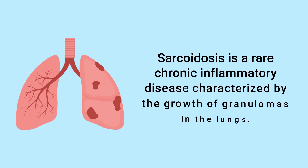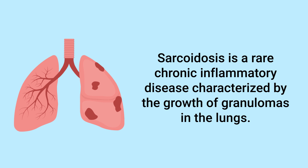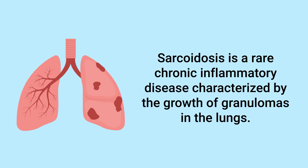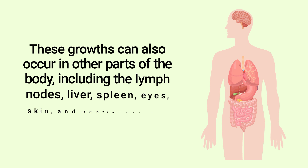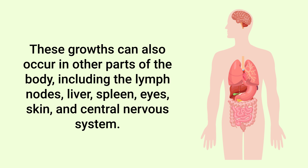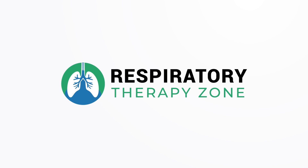Sarcoidosis is a rare chronic inflammatory disease characterized by the growth of granulomas in the lungs. These growths can also occur in other parts of the body including the lymph nodes, liver, spleen, eyes, skin, and central nervous system. We created this video to cover the medical definition and provide a brief overview of this topic.